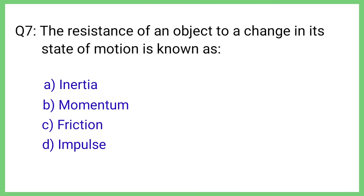Question No. 7. The resistance of an object to a change in its state of motion is known as. The correct answer is Option A. Inertia.